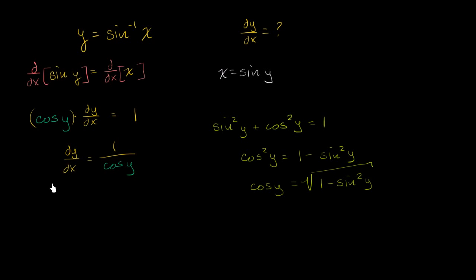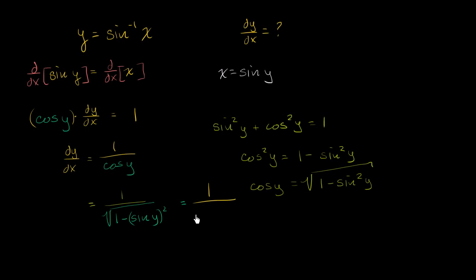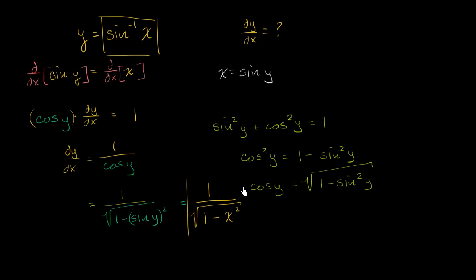We can rewrite dy/dx as one over the square root of one minus sine squared of y. Since sine of y is just x, substituting back in gives us one over the square root of one minus x squared. So the derivative with respect to x of the inverse sine of x is equal to one over the square root of one minus x squared.